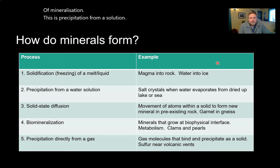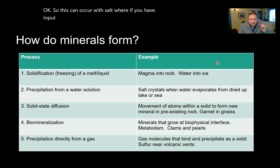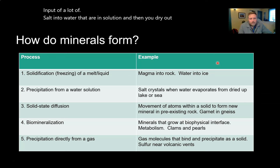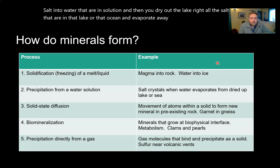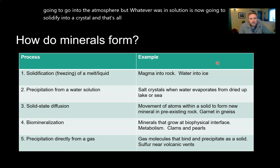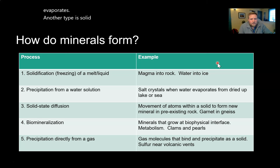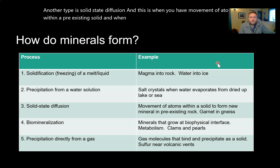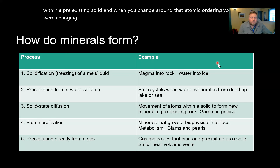Precipitation from solution can occur with salt: if you have a lot of salts dissolved in water and then you dry out the lake, all the water evaporates into the atmosphere, but whatever was in solution solidifies into a crystal. That's all salt is — the stuff left behind when water evaporates. Another type is solid-state diffusion, where movement of atoms within a pre-existing solid changes the atomic ordering, thereby changing the mineral structure. This happens in metamorphic rocks like gneiss.